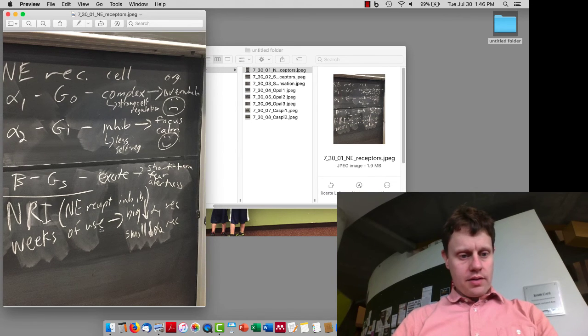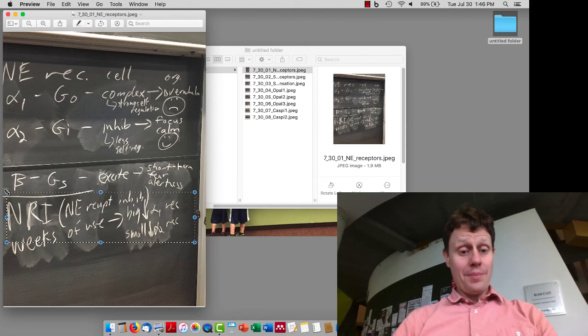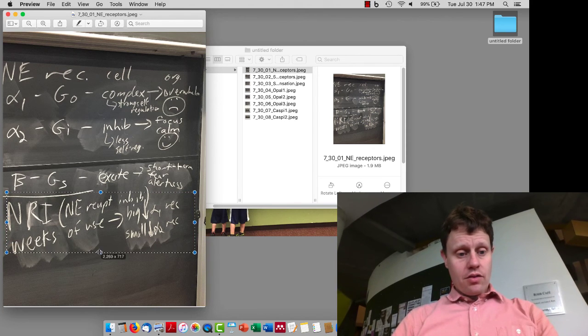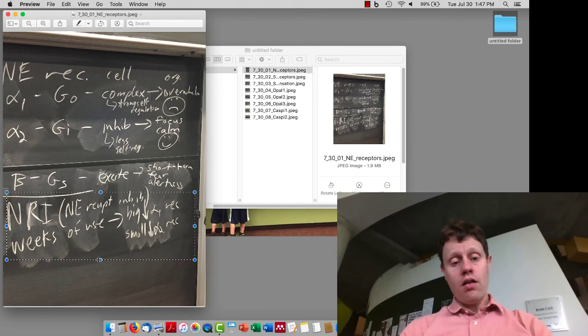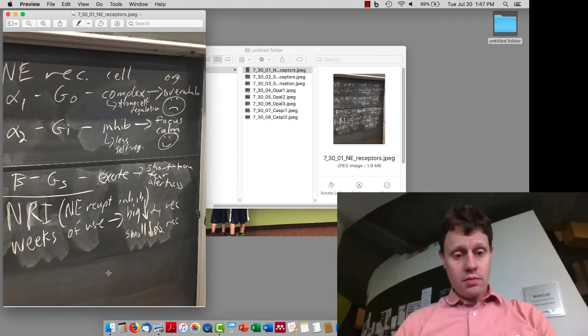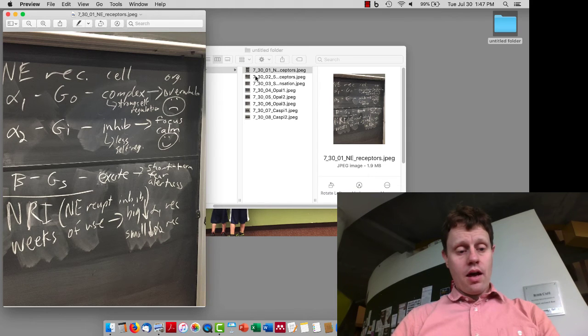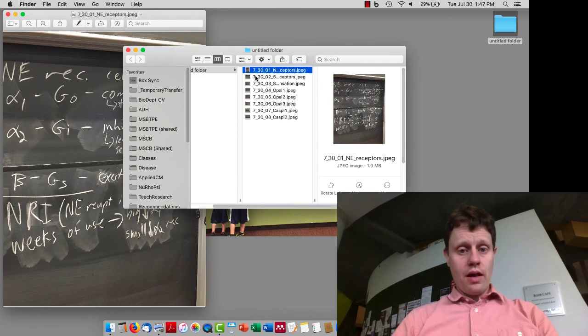As a reminder from last time, we discussed how norepinephrine reuptake inhibitors by enhancing norepinephrine cause a decrease in all of the numbers of receptors, but the alpha-1 receptors decrease the most proportionally, which then leads to a ratio that favors more of the alpha-2s.